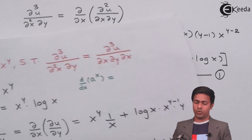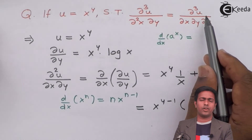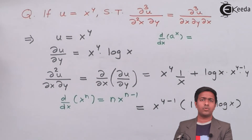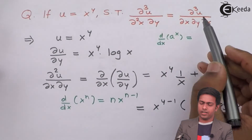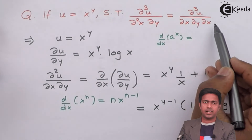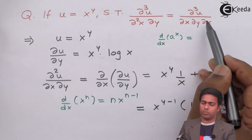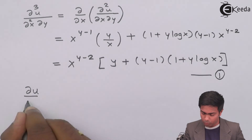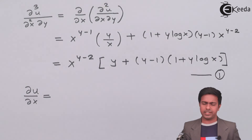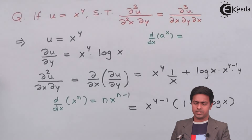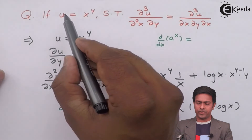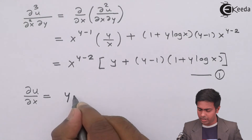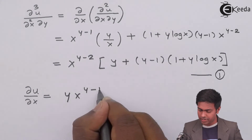Now let's find the value of the RHS, which we'll call equation number 2, and observe if both values are the same. Starting from the innermost differentiation, we find ∂u/∂x: partially differentiating u = x^y with respect to x, y is treated as constant, so the derivative is y·x^(y-1).